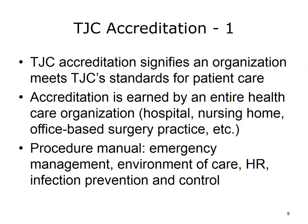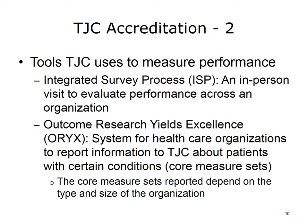TJC performs two functions to keep patients safe. Achieving accreditation signifies that an organization meets TJC's standards for patient care. Accreditation is earned by an entire healthcare organization, such as a hospital or long-term care facility. Each organization must follow a procedure manual customized for that type, covering topics such as emergency management, environment of care, human resources, and infection prevention and control. TJC collects data through on-site surveys and performance measurement. The Integrated Survey Process, or ISP, is an on-site survey lasting at least three days. TJC also requests data through a performance measurement system known as Outcome Research Yields Excellence, or ORYX.